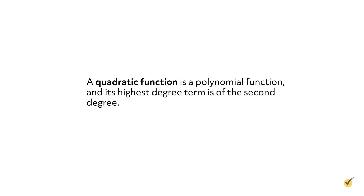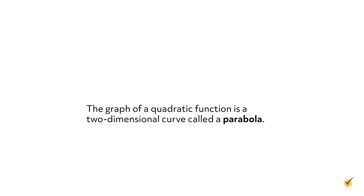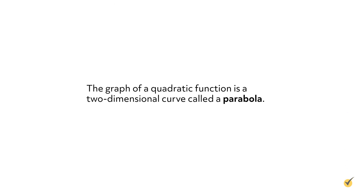Before we get started, let's review a few things. A quadratic function is a polynomial function and its highest degree term is of the second degree. The graph of a quadratic function is a two-dimensional curve called a parabola. The parabola can open upward or downward and can vary in width.